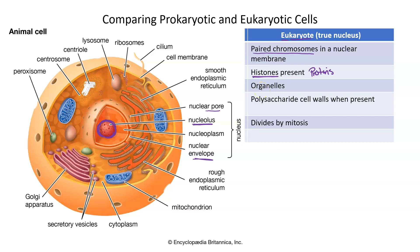Inside of a eukaryote, you will see all of these various membrane-bound organelles. Eukaryotes possess mitochondria, endoplasmic reticulum — both rough and smooth — the Golgi apparatus, lysosomes, vesicles, vacuoles, and centrioles. All of these different structures are membrane-bound. Prokaryotes don't have those.